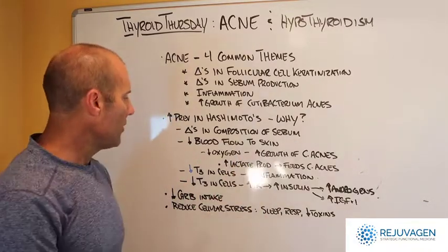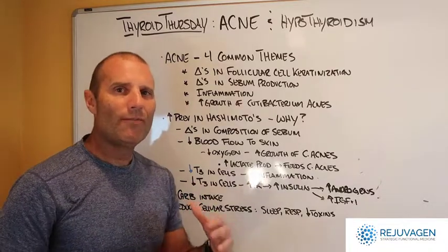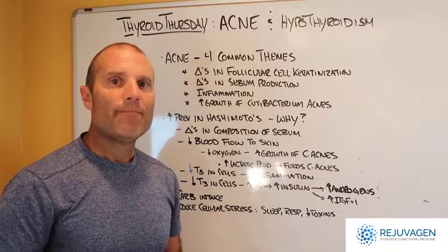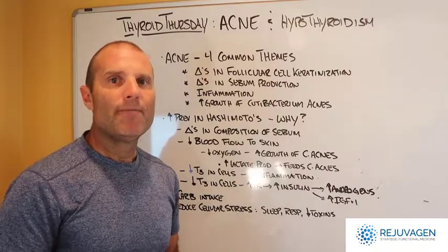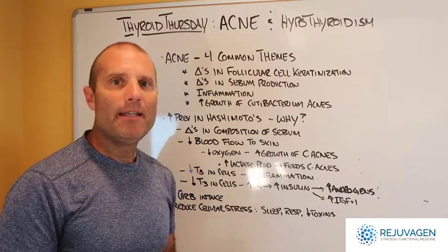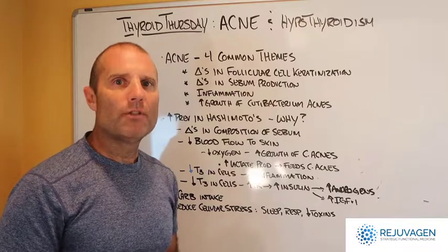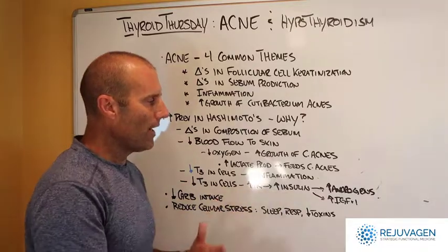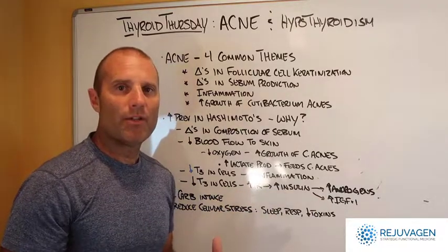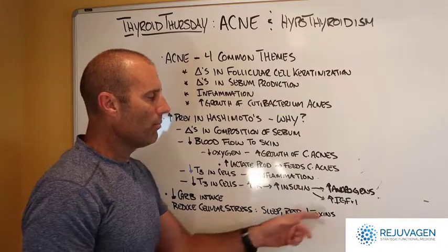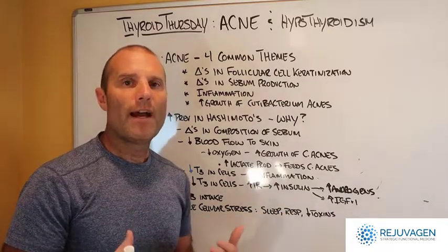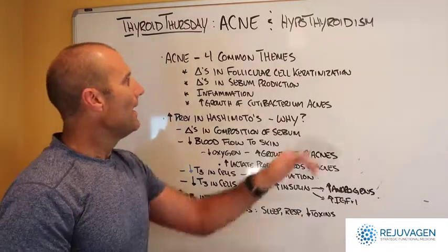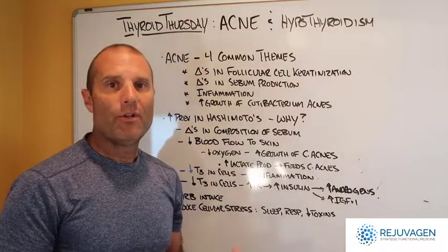The third part is that when you have decreased T3 in your cells, your cells become more insulin resistant. When your cells become more insulin resistant, we have increased insulin needing to be produced to try and drive glucose into cells. Increased insulin drives up the production of androgens, and it also increases the production of insulin-like growth factor 1. Both the androgens and insulin-like growth factor 1 can increase follicular cell production.